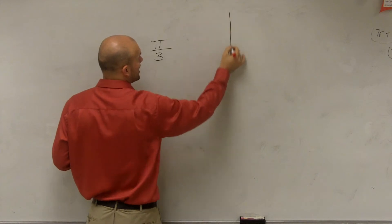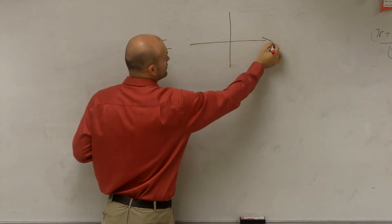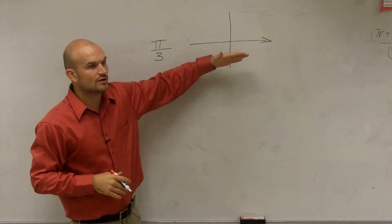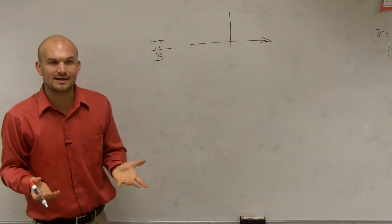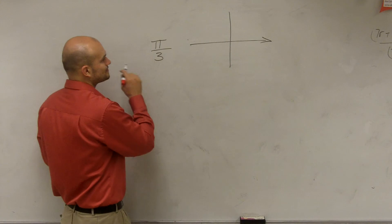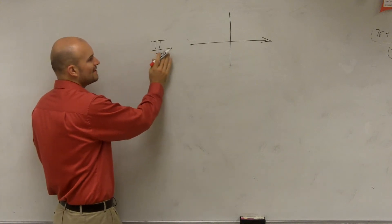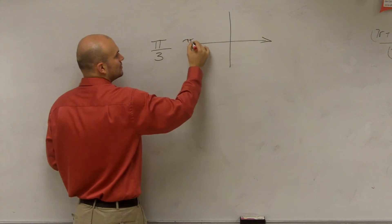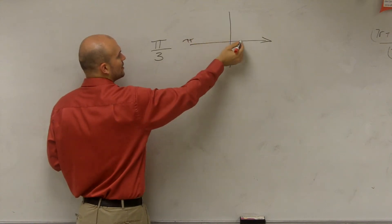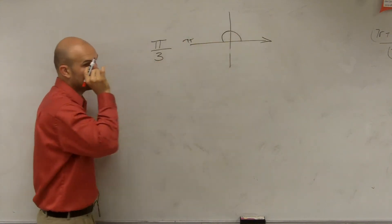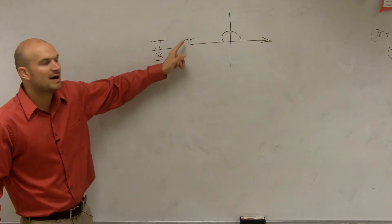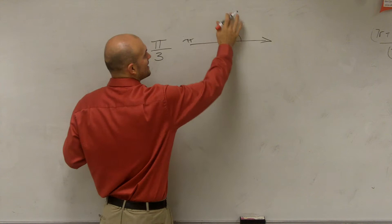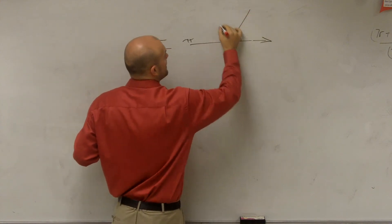So let's start out with where π over 3 is. If I have an angle, remember we're going to start on our initial side, which would be our x-axis, and then we're going to rotate it π over 3 radians. Remember, if I rotated π radians, that would be halfway around the circle. However, this is π radians divided by 3.